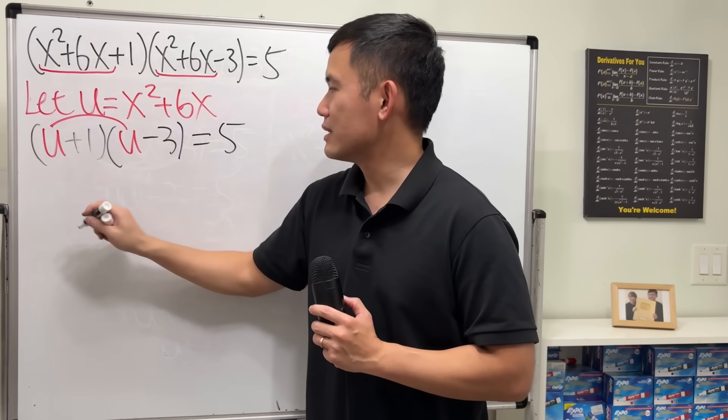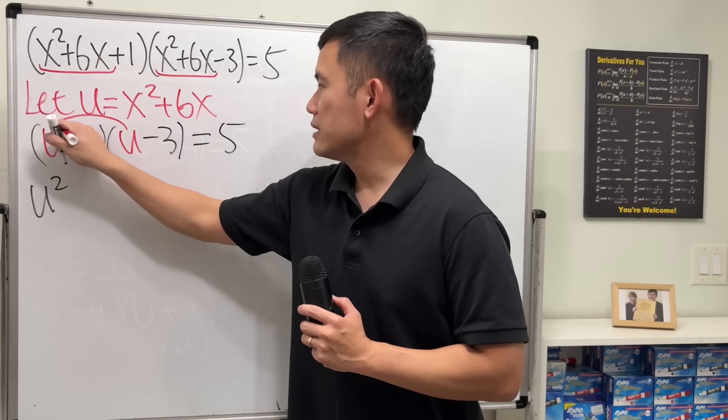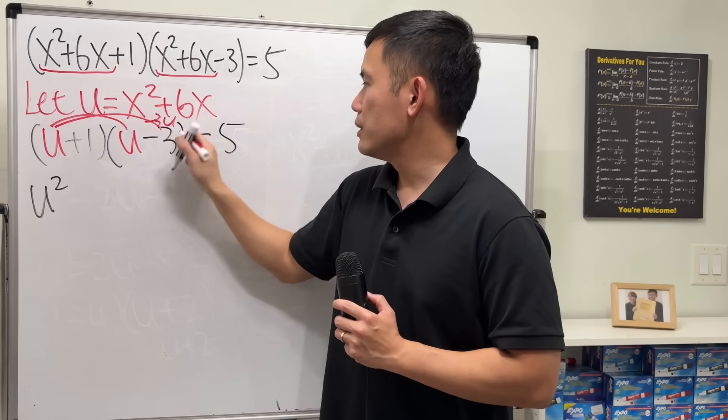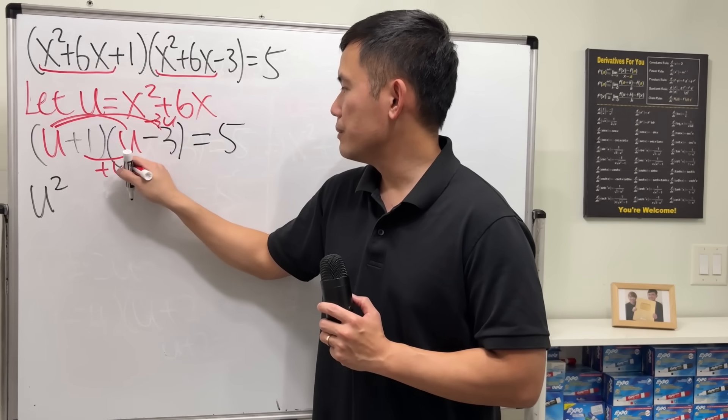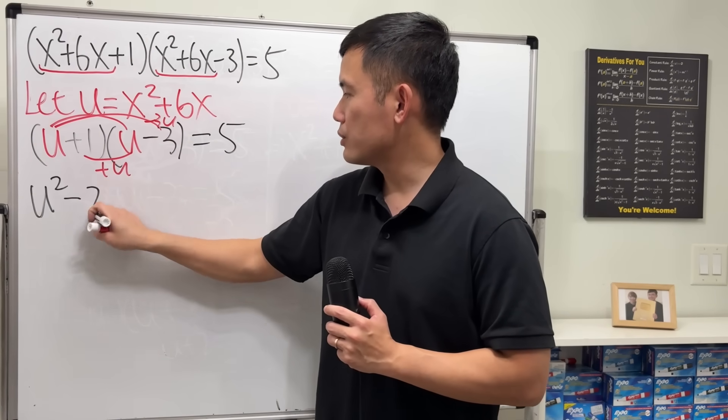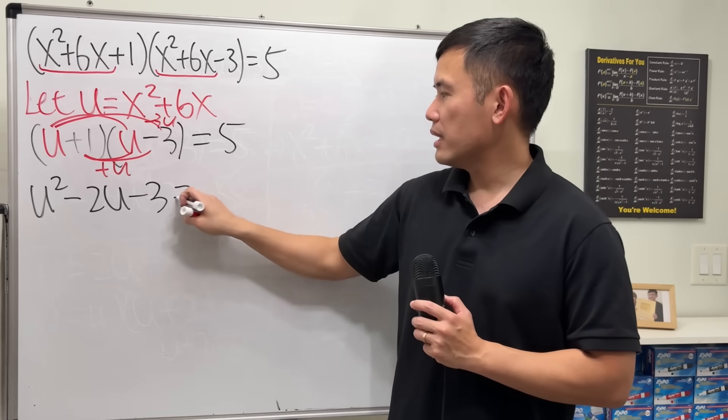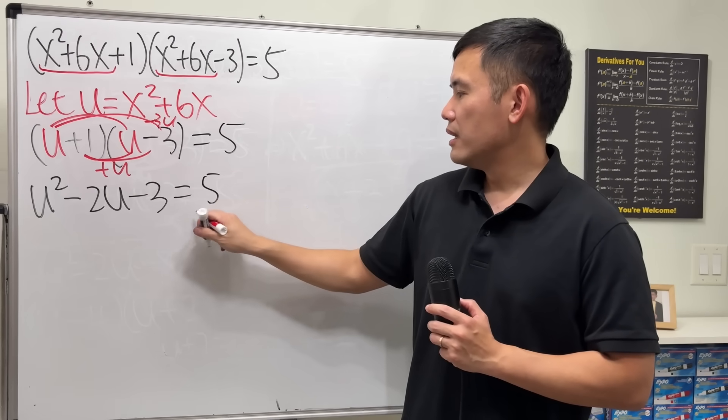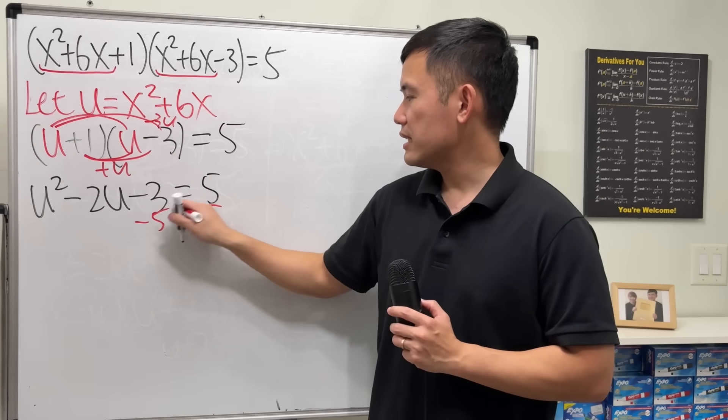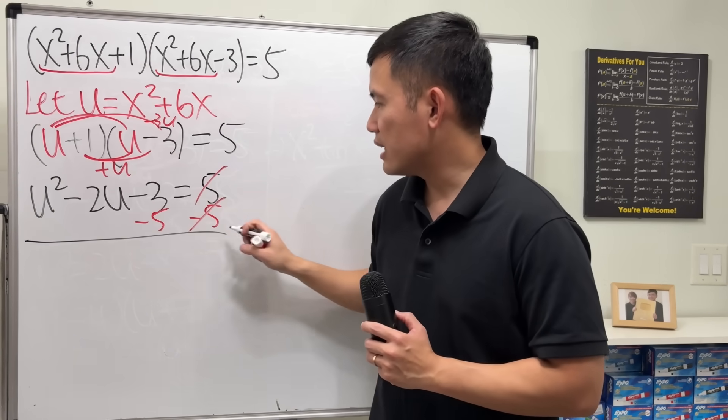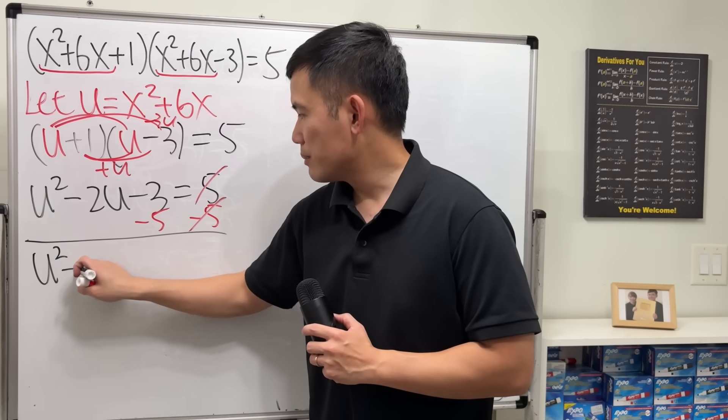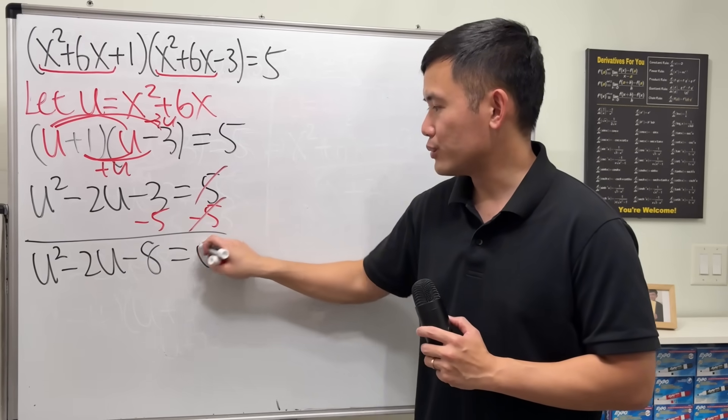Okay, so multiply this out. This times this, we get u squared. This times that is negative 3u. This times that is plus u, so together, we have minus 2u. 1 times negative 3 is negative 3, and that is equal to 5. So, subtract 5 to both sides, and we can get u squared minus 2u minus 8 is equal to 0.